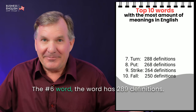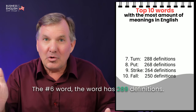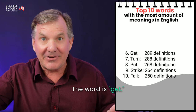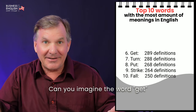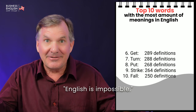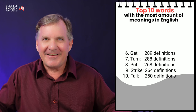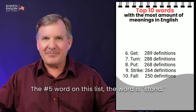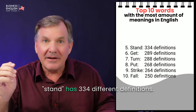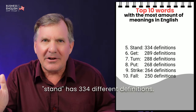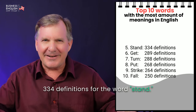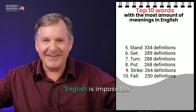At number six, the word 'get' has 289 definitions. Can you imagine? The word get has 289 different definitions. English is impossible. At number five, the word is 'stand,' and stand has 334 different definitions. 334 definitions for the word stand. How can you learn English? English is impossible.